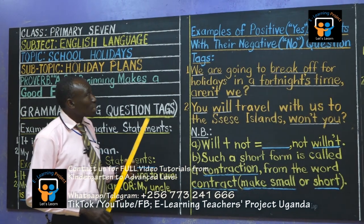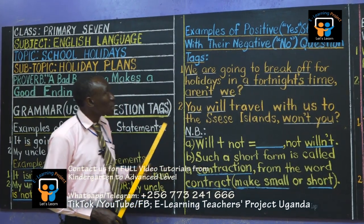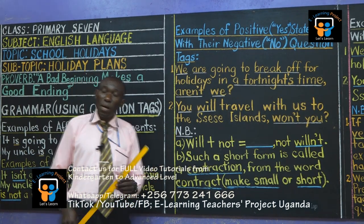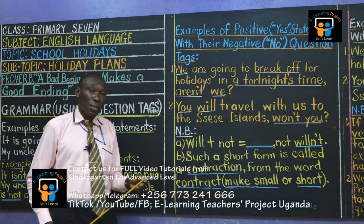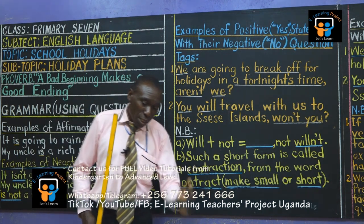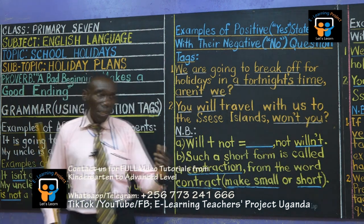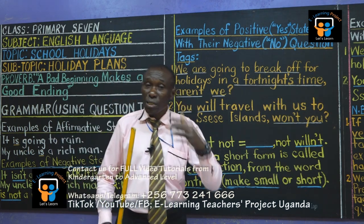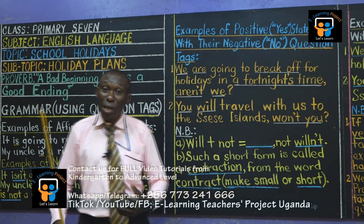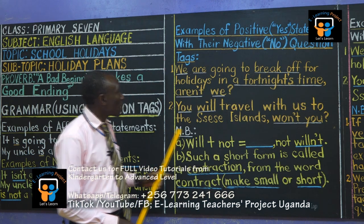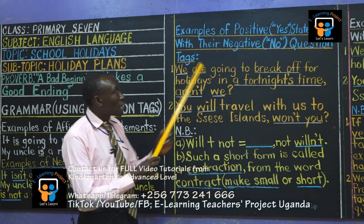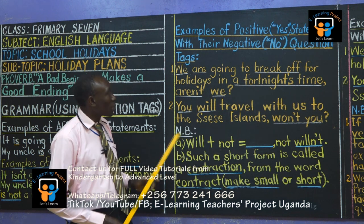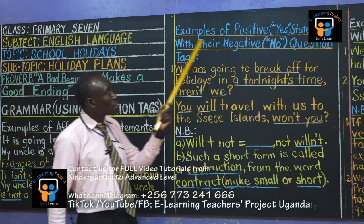I'd like us now to look at examples of positive yes statements with their negative or no question tags. I remember before we went out for the break, we said and understood it very well that when you have a no here, you have a yes here. When there is something good, there is something bad. You have a short man and yet there is a tall one. There is a beautiful lady and maybe there must be an ugly one. Opposites. So here we are looking at positive, which is yes, and the opposite of yes — everyone knows, even the angels know — the opposite of yes is no.